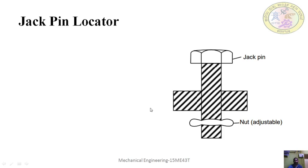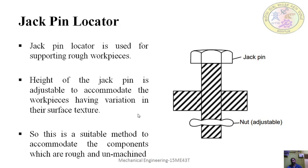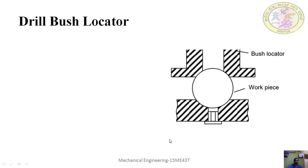The jack-pin locator is used for workpieces having a rough surface. Unlike cases where the workpiece has a machined surface (flat locator) or a hole (cylindrical locator), when the workpiece is not machined yet and has a very rough surface, you use a jack-pin locator. The height of the jack pin is adjusted to accommodate the workpiece's variant surface structure. This is the suitable method for accommodating components which are rough and unmachined — for locating rough and unmachined surfaces, jack-pin locators are used.